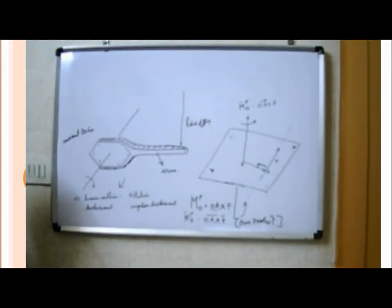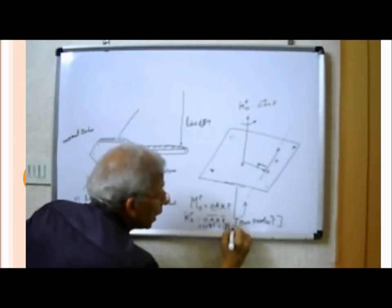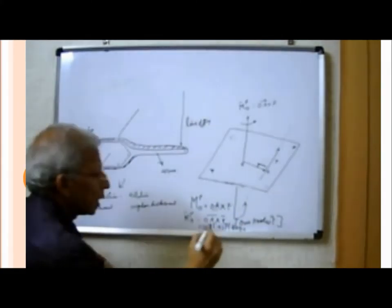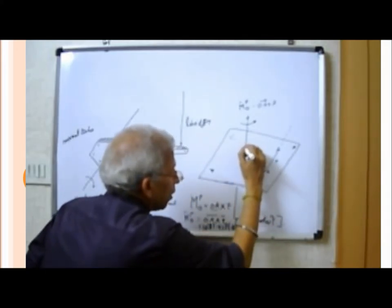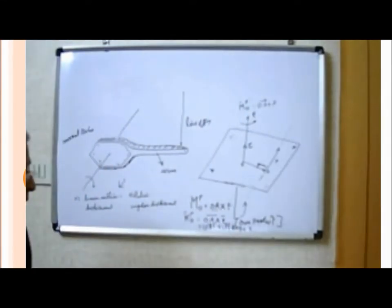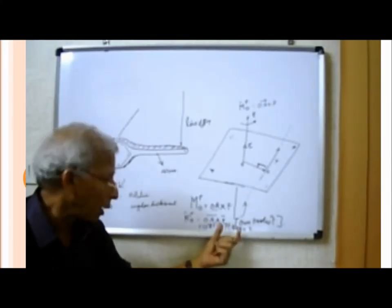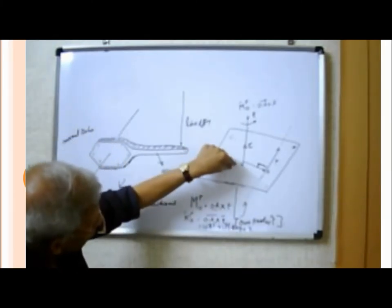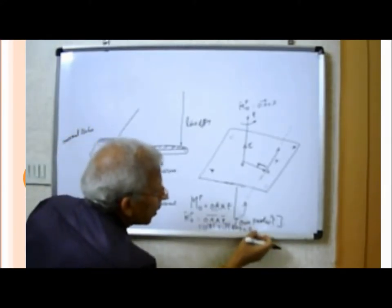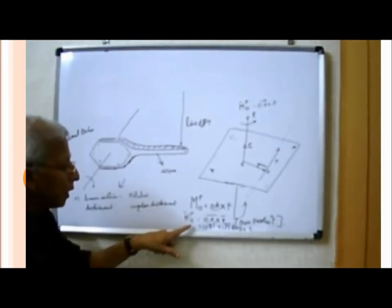In case of a vector, a dot product always gives a scalar, whereas a vector product gives you another vector. The magnitude of the cross product OA⃗ × F⃗ is |OA⃗| times |F⃗| times sinθ, multiplied by the unit vector along the axis of rotation — let us call it C⃗. So the magnitude of the moment is |OA⃗| × |F⃗| × sinθ, times the unit vector C⃗. Hence, the direction is also taken care of, instead of you specifying it separately.